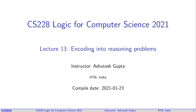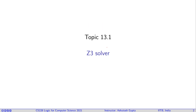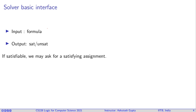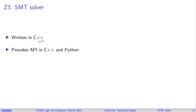We are going to look into encoding problems into reasoning problems and solving them using a constraint solver. We will look at a particular solver called Z3, which is a kind of SMT solver. It takes a formula as input and tells you whether it is satisfiable or unsatisfiable. If satisfiable, we may ask for a satisfying assignment. It provides an interface in C++ and Python, and this Python interface is very important to us. We will be writing our code in Python and running this tool as a library.